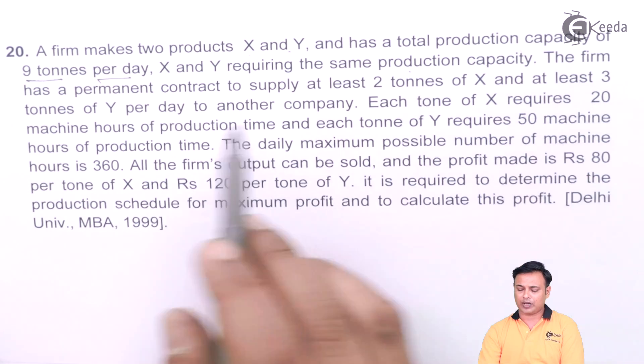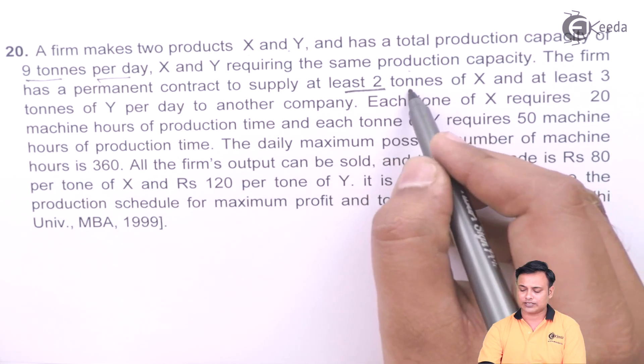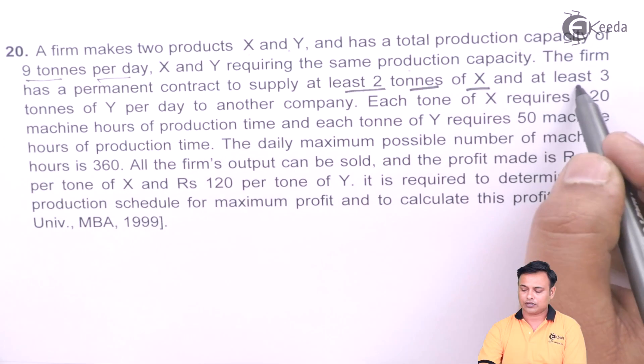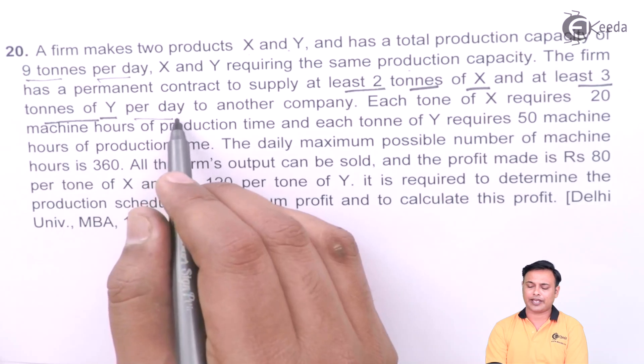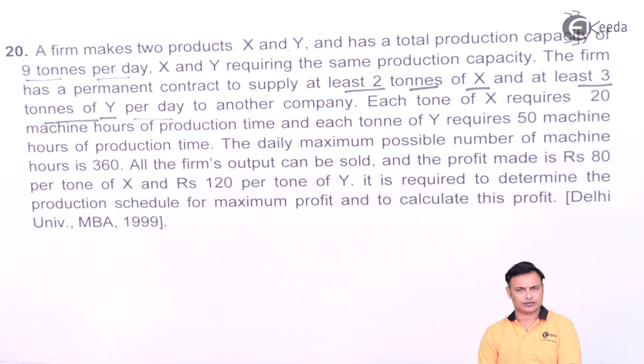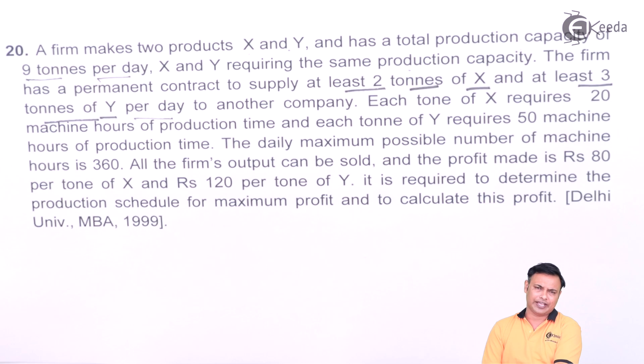The firm has a permanent contract to supply at least two tons of X and at least three tons of Y per day to another company. So there is a minimum supply constraint. You have to supply minimum two tons of X and three tons of Y every day. So your production cannot go below this.